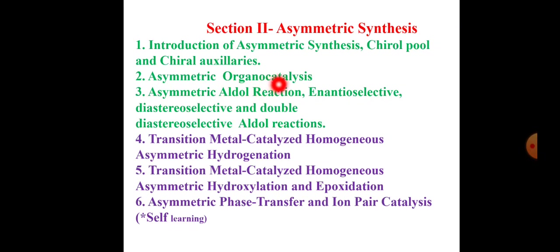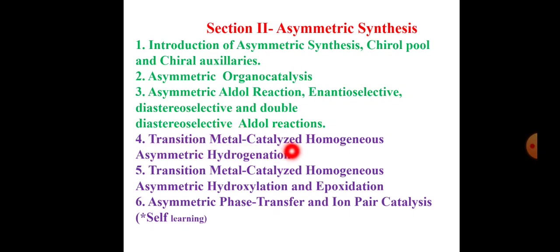Number 2: Asymmetric Organocatalysis — different types of organocatalysis used in asymmetric synthesis. Number 3: Asymmetric Aldol Reaction, including Enantioselective, Diastereoselective, and Double Diastereoselective Aldol Reaction. Number 4: Transition Metal Catalyzed Homogeneous Asymmetric Hydrogenation. Number 5: Transition Metal Catalyzed Homogeneous Asymmetric Hydroxylation and Epoxidation. And last: Asymmetric Phase Transfer and Ion-Pair Catalysis. This is the total syllabus of Asymmetric Synthesis, 6 chapters. We will discuss one by one.